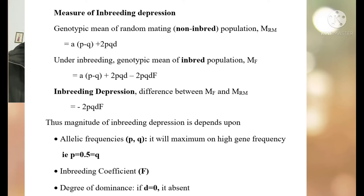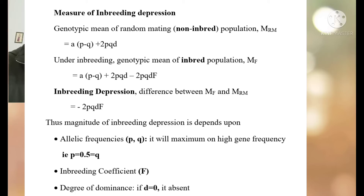Inbreeding depression will be highest when P and Q are both equal to 0.5. When P equals Q equals 0.5, inbreeding depression will be maximum. Additionally, with an increase in the value of the inbreeding coefficient, the value of inbreeding depression will increase. Similarly, with an increase in the degree of dominance, the inbreeding depression value will also increase.